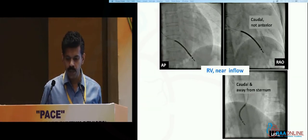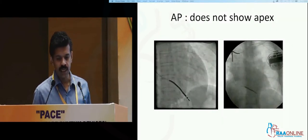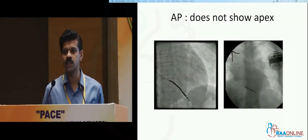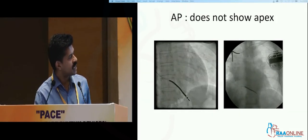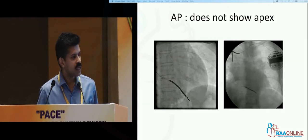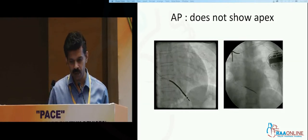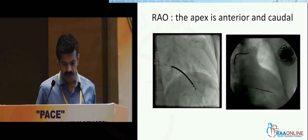The next point is that the anterior-posterior view hardly shows the apex. This is the first lead, and this is the second lead. This lead is near the apex; this lead is nowhere near the apex. So just using an AP view to find the apex will not be adequate — that's the first point.